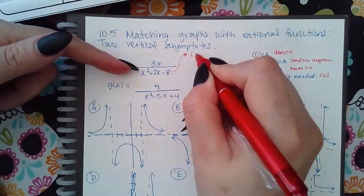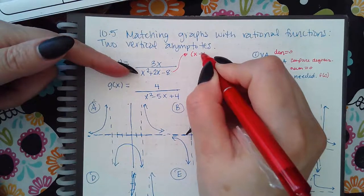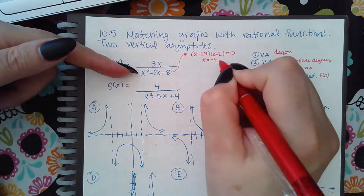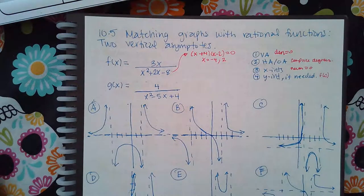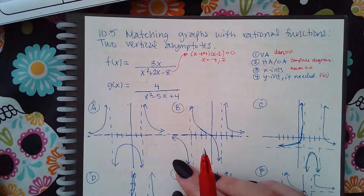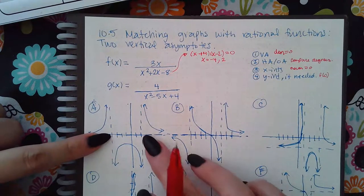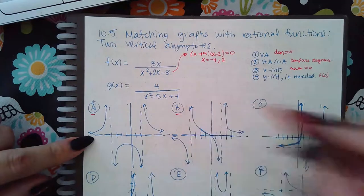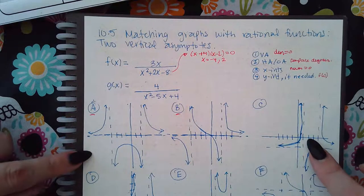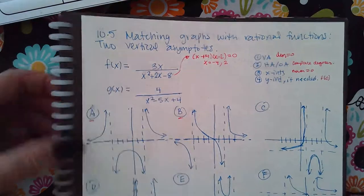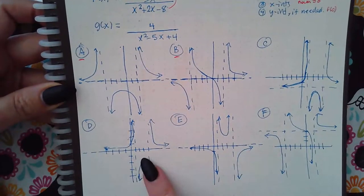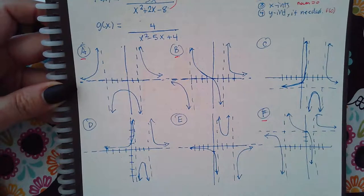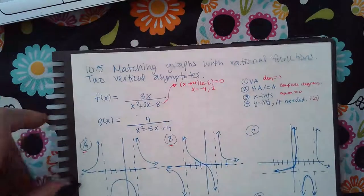I'm going to set the denominator equal to zero, so I get x plus four and x minus two equal to zero, which means x equals negative four and positive two. Going through all the graphs: graph A has negative four and positive two, so it could be A. Graph B also has negative four and positive two, so it could be B. C does not have those asymptotes, neither does D or E. Graph F does, so we've narrowed it down to A, B, or F.